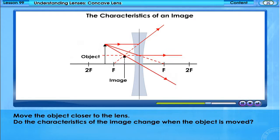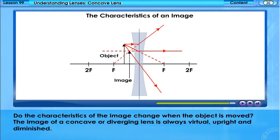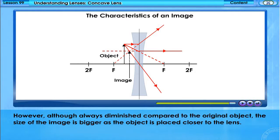Move the object closer to the lens. Do the characteristics of the image change when the object is moved? The image of a concave or diverging lens is always virtual, upright and diminished. However, although always diminished compared to the original object, the size of the image is bigger as the object is placed closer to the lens.